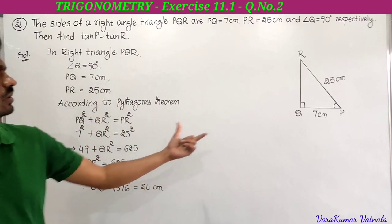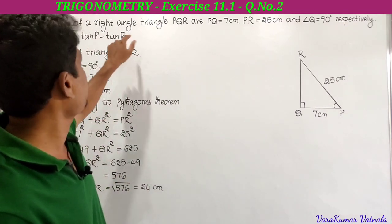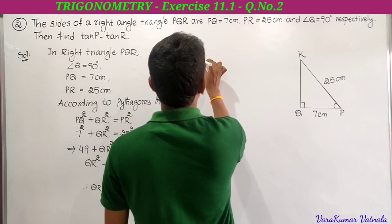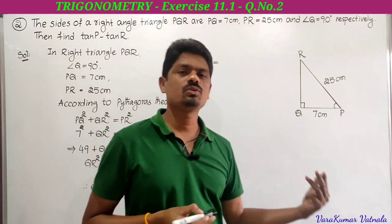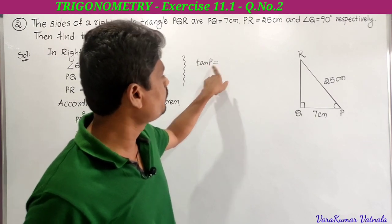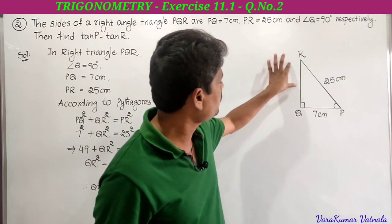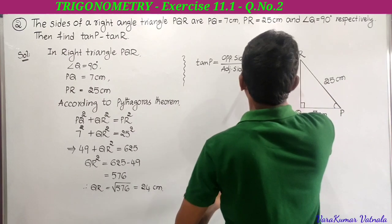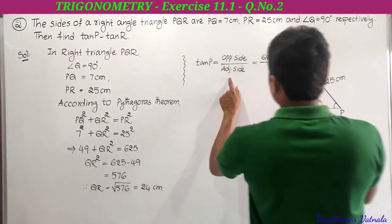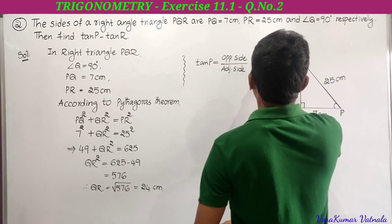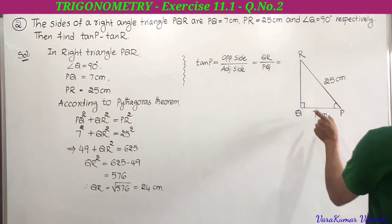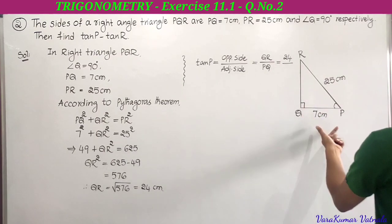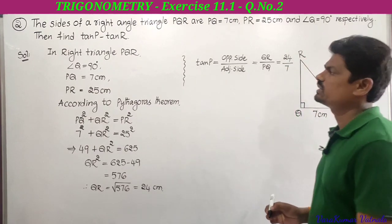Therefore QR is equal to square root of 576, which is 24. So QR equals 24 cm. Now we have the lengths of all three sides. He is asking to find tan P minus tan R. Tan P equals opposite side by adjacent side. Opposite side to angle P is QR, adjacent side is PQ. So tan P equals QR divided by PQ, which is 24 divided by 7.